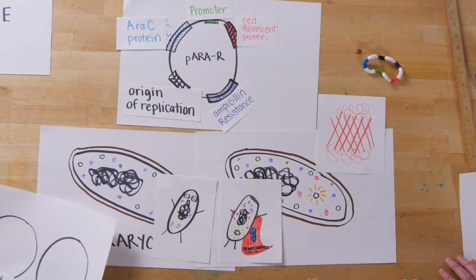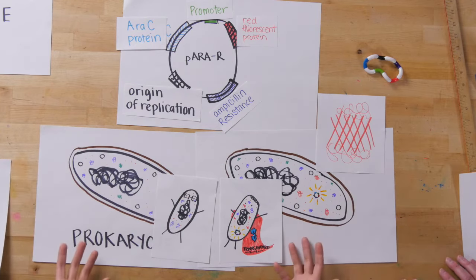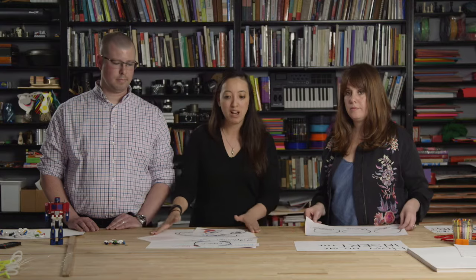Now we want to make a lot of this red fluorescent protein. Our goal is to produce this product. So now we have to grow the bacteria that have the super power. So how do we grow bacteria? One way to grow bacteria is to grow them on plates.